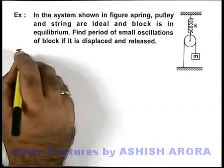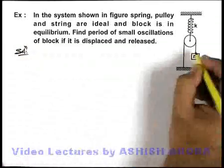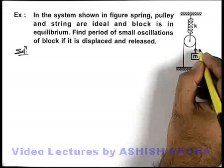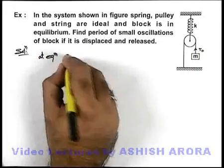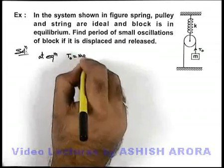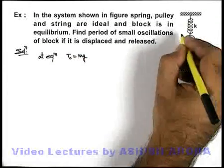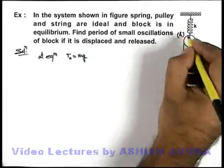Here in this situation, for analyzing this, if we consider that initial tension in the spring is T₀, so we can state at equilibrium, T₀ must be equal to mg.